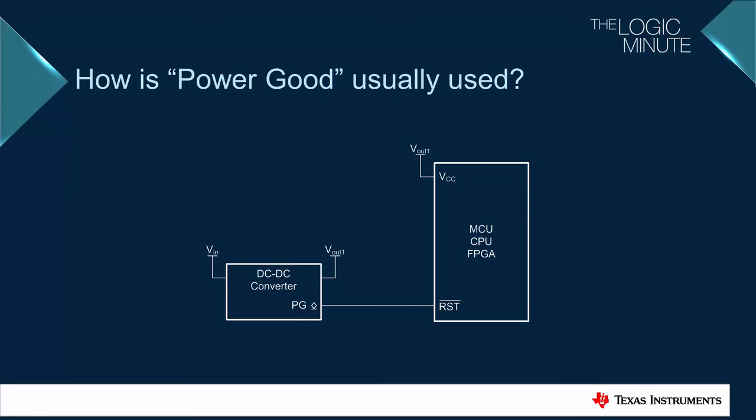Because the output is typically open drain, a pull-up resistor is required to bring the line high once regulation is achieved. Then the system can start working as usual.